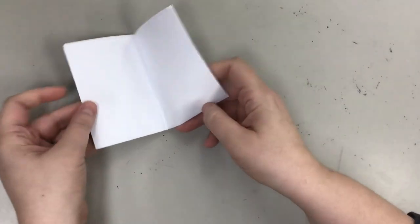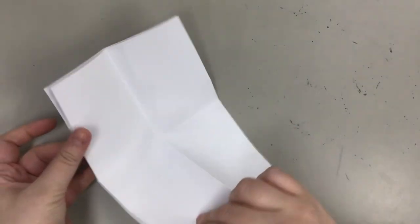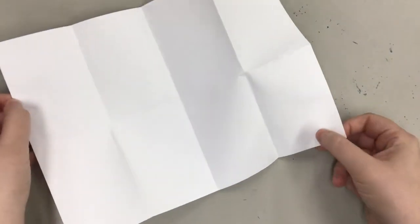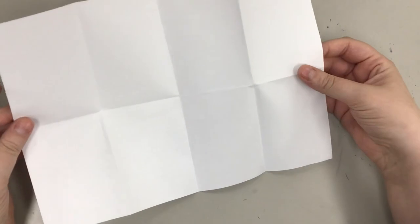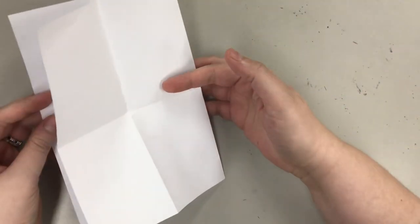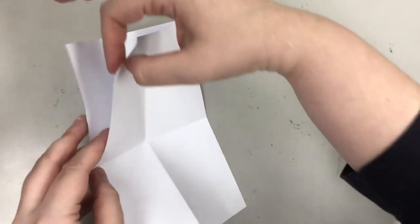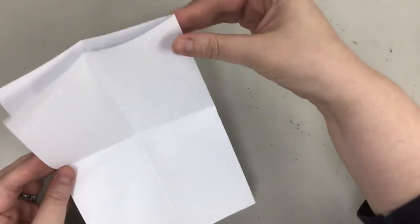When you open it up you'll see that you've made eight little rectangles and what you're going to do is you're going to fold it kind of in half this way. You're going to have the open side and the closed side.